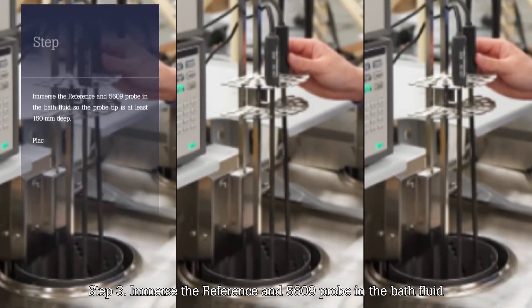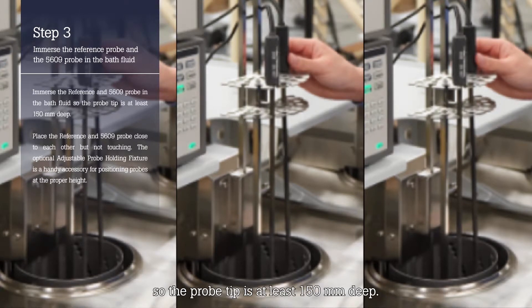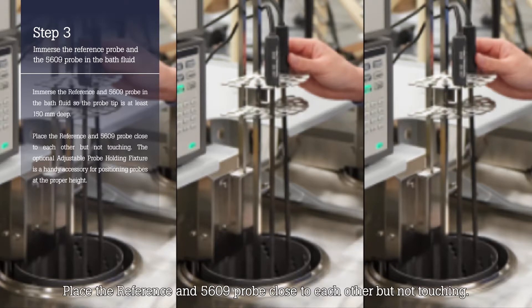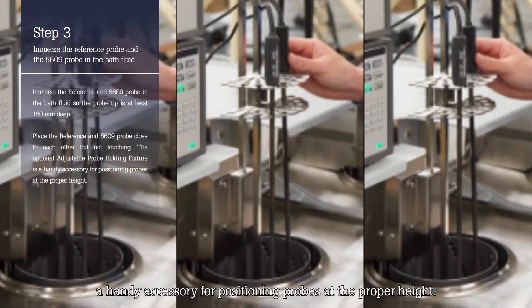Step 3. Immerse the reference and 5609 probe in the bath fluid so the probe tip is at least 150 millimeters deep. Place the reference and 5609 probe close to each other but not touching. The optional adjustable probe holding fixture is a handy accessory for positioning probes at the proper height.